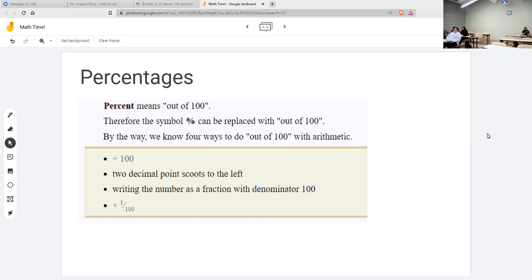So percent means out of 100, and if you see a percent symbol, then that means out of 100, because that's what percent is. So I'm going to write at the top 47 percent. Now, that percent symbol isn't a math thing. That's just a symbol.